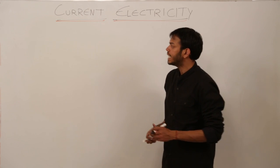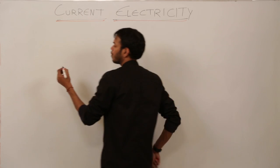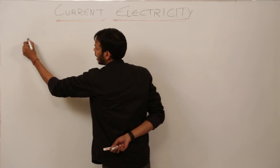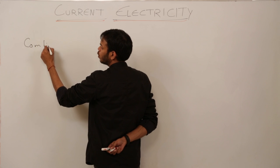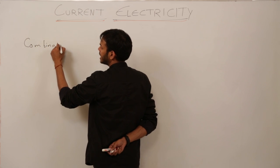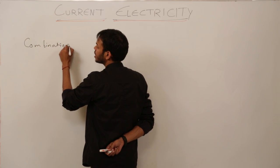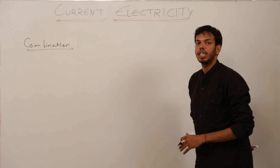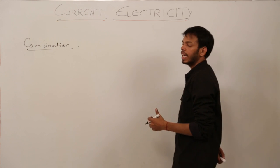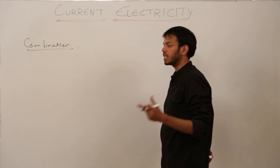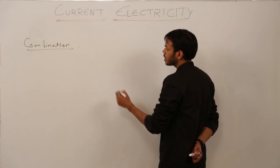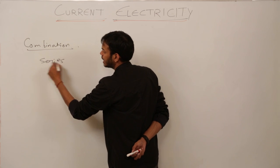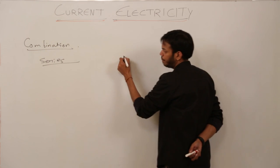Once we have already done various formulas about resistors, we will do the combinations of resistors. What are two various combinations of resistors? Exactly like capacitors, resistors are connected in series and in parallel.